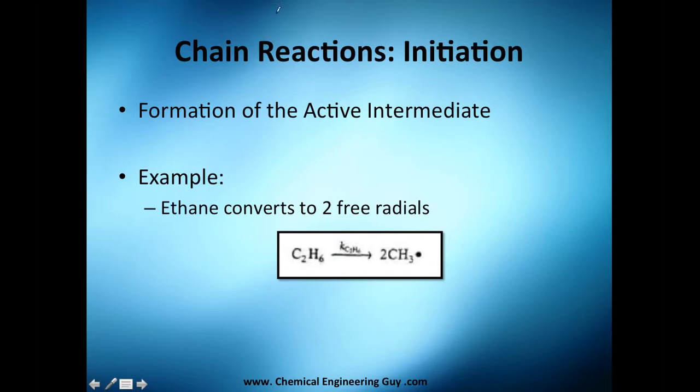Let's see a little bit more on the initiation. Here's where you form the active intermediate. An example: let's take the example of ethane that goes into butane. So of course you need to balance it, but anyways, let's do it with this equation. You got C2H6, and two molecules of this broken.